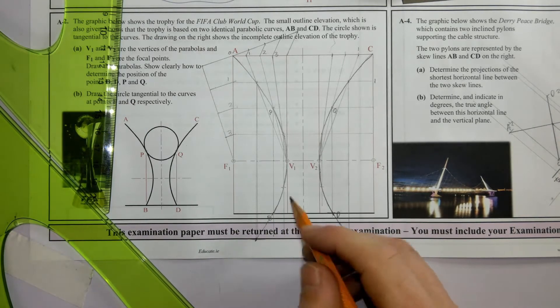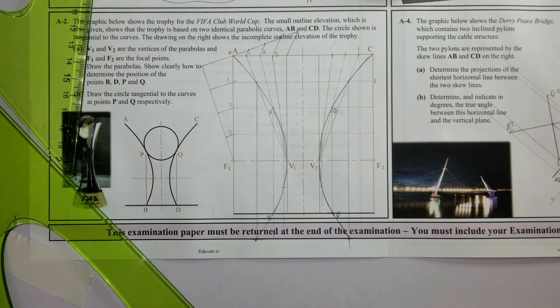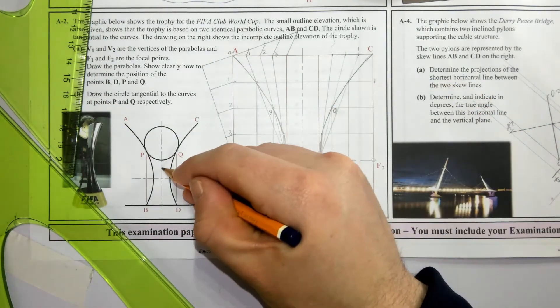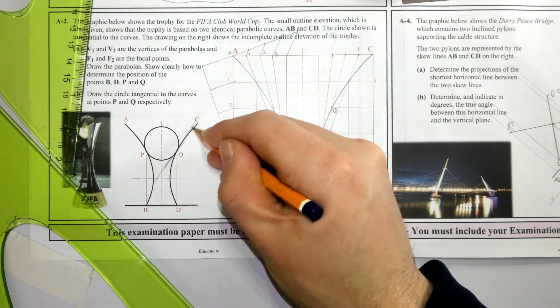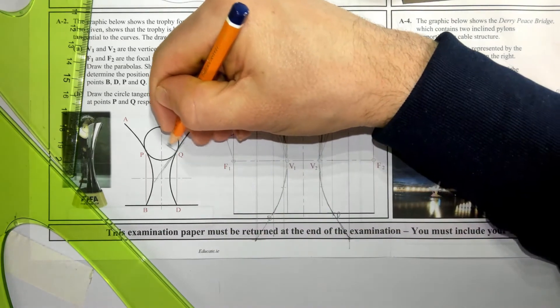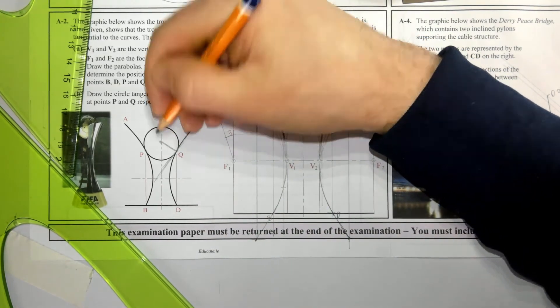Now draw a circle tangential to the curves at point P and Q. To do that we need to draw a tangent to the parabola. The center point of the circle lies on the normal which is at 90 degrees to the tangent at the point of contact and intersects the centerline at the center of the circle.